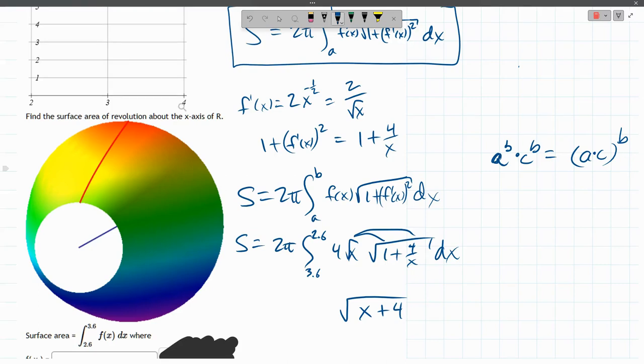All right. The 4 is a constant. It's going to move outside. 8π integral. Oh, and I totally put these in the wrong order. And what would happen if I continued with this mistake? If this is the only mistake I made, I would get negative.